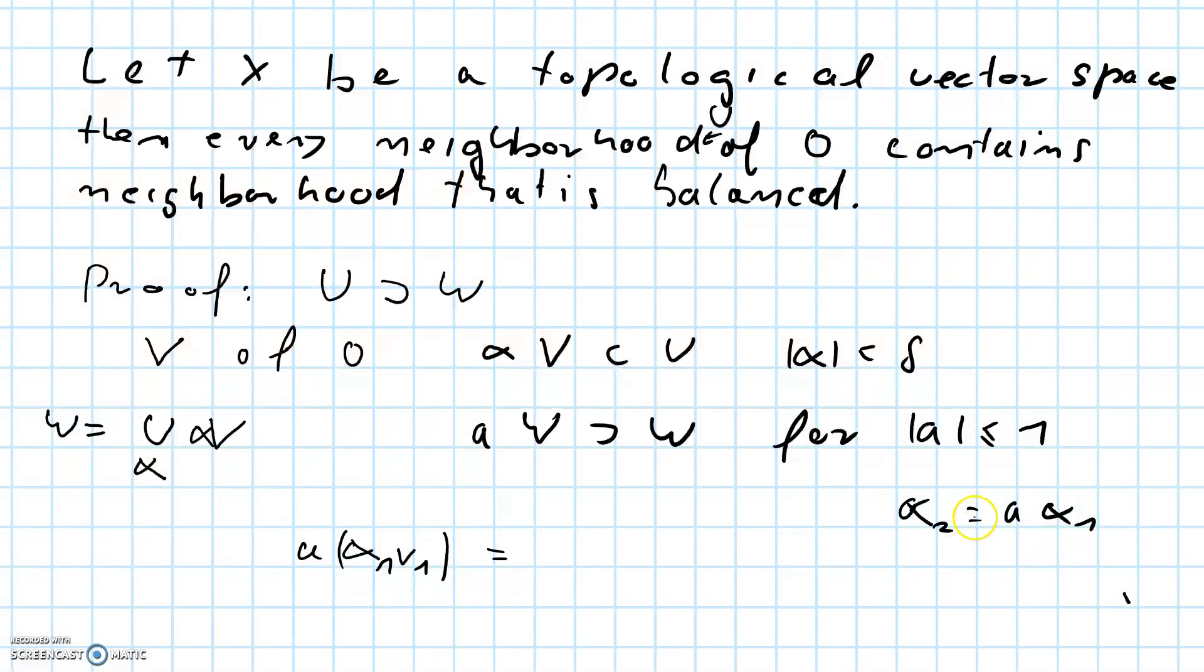And note that the absolute value of alpha two is the absolute value of a, which is less than or equal to one by definition, and times the absolute value of alpha, which is less than delta. So the absolute value of alpha two is less than delta.